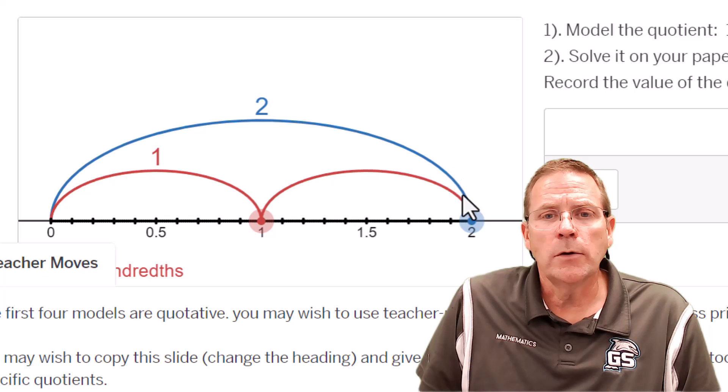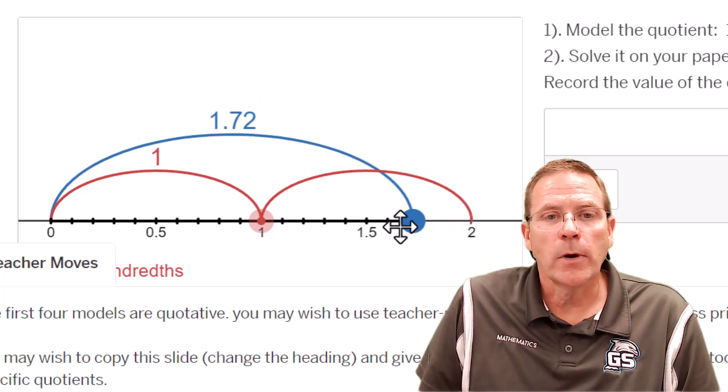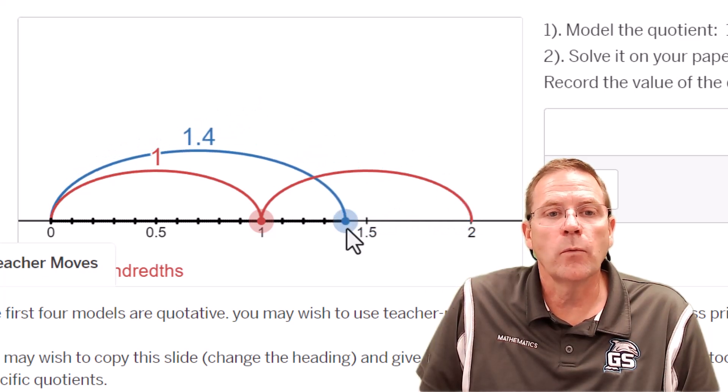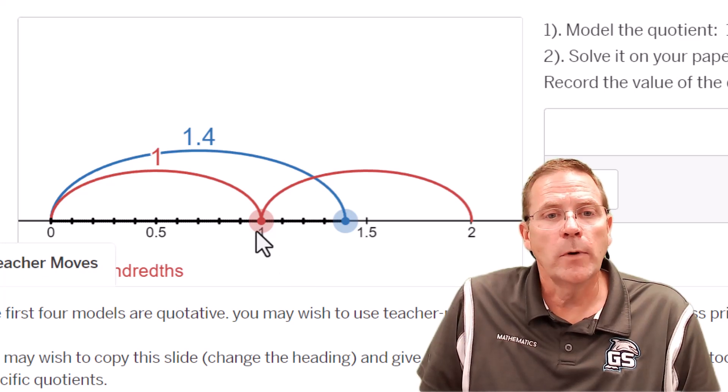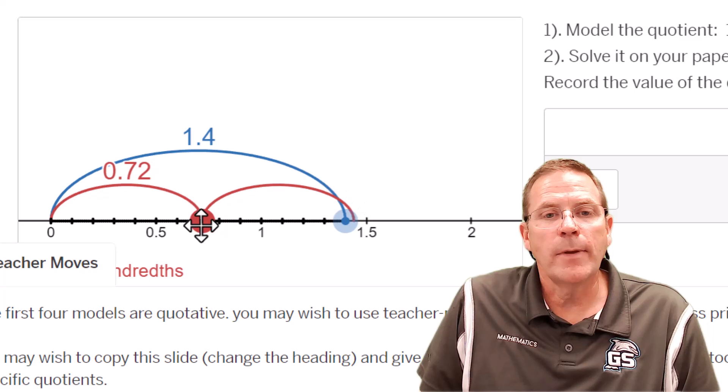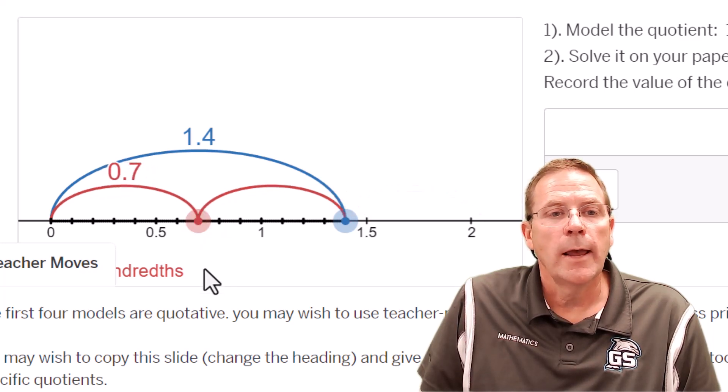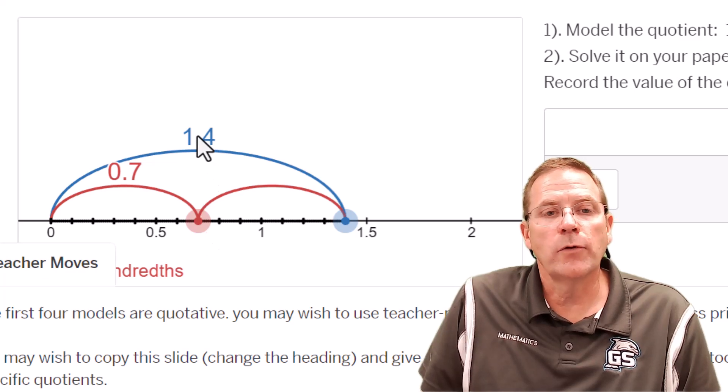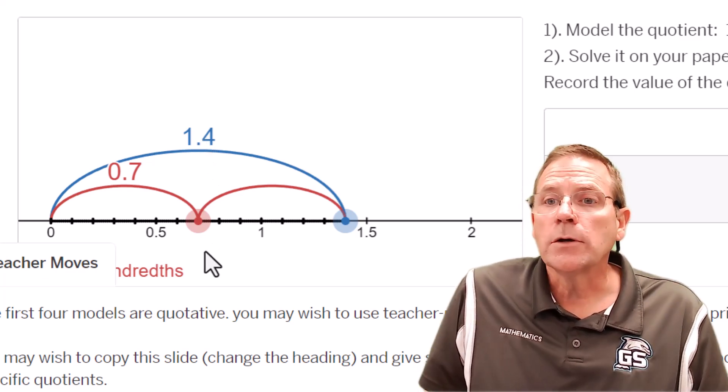So what we're going to do is we're going to take our big section and we're going to drag it down until it's 1.4. Then we're going to grab the middle part of our little pieces and we're going to drag it down until it matches, which is right there.